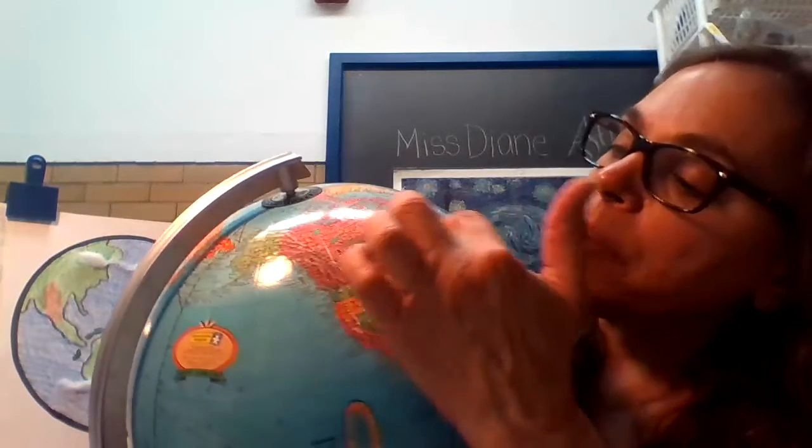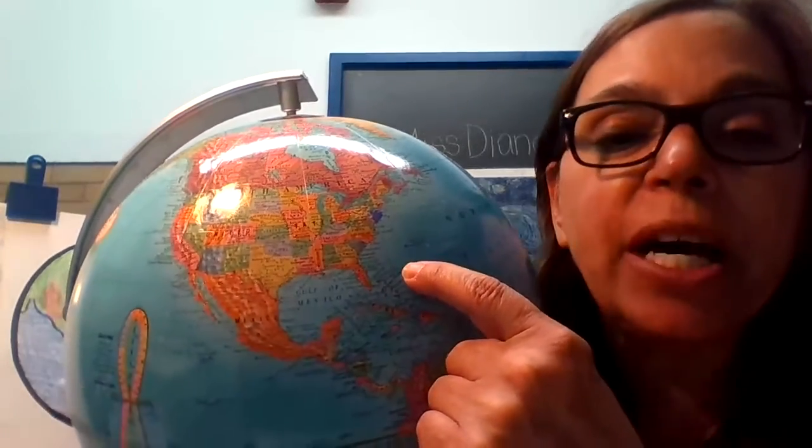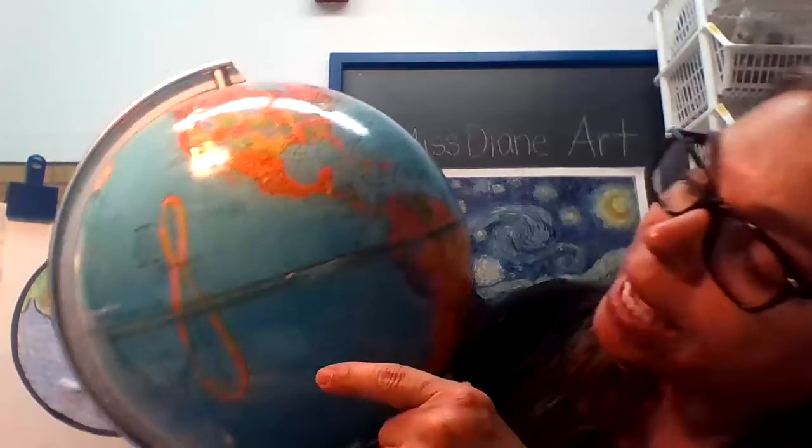The colored part is the land, and we live right here. This is North America, where we live. This is the United States. Here is Newark, New Jersey, where that little sticker is. Down here is Florida and the islands. Then we have Central America and South America.